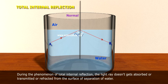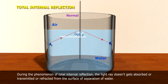During the phenomenon of total internal reflection, the light ray does not get absorbed, transmitted, or refracted from the surface of separation. The light ray always gets reflected back into the denser medium.